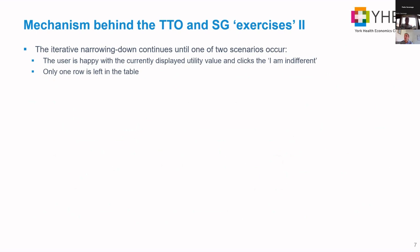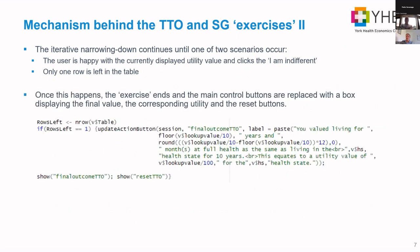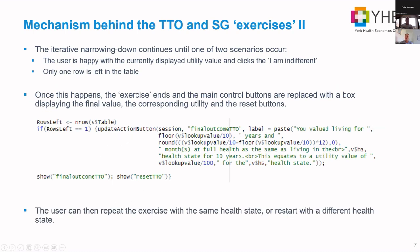The process continues until one of two scenarios occurs: either the user is indifferent with the currently displayed value and clicks the indifferent button, as I did for standard gamble, or there is only one row left in the table, as in the time trade-off exercise. When this happens, the exercise ends, the buttons are replaced with a box displaying the final value, and a reset button appears. The reset button lets users repeat the exercise with the same health state or restart with a different one.